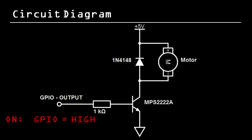Now if we want to turn the motor on, we simply set the GPIO pin high. And if we want to turn it off, we set the pin low.